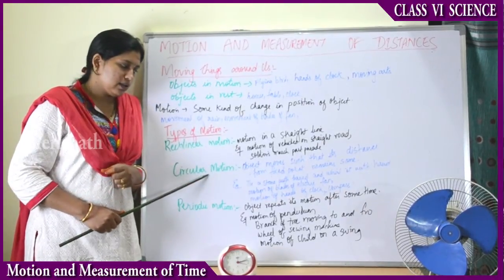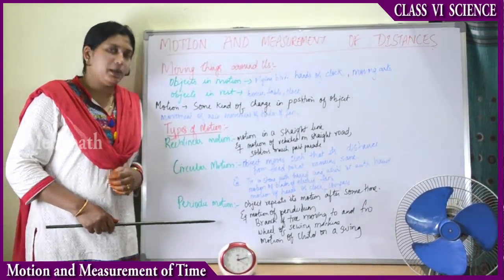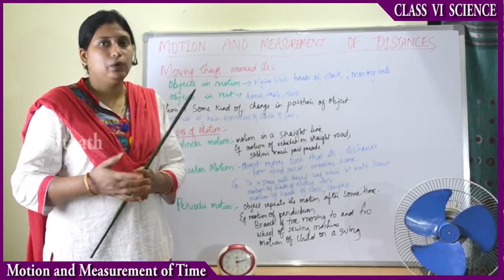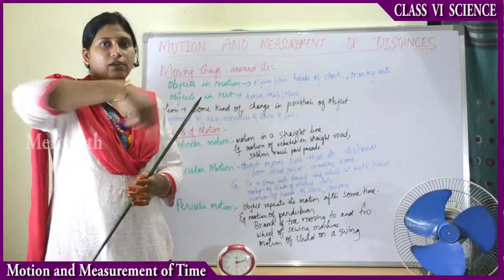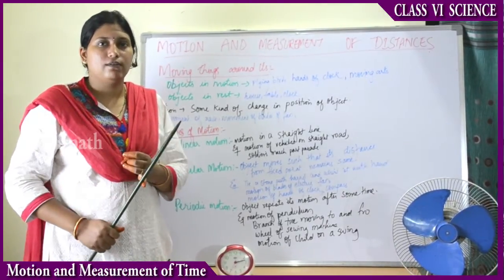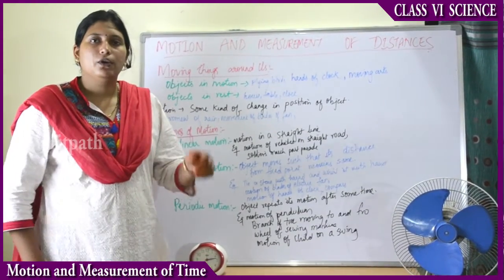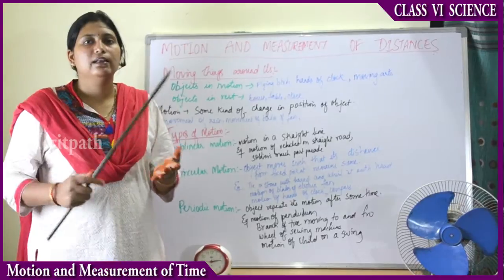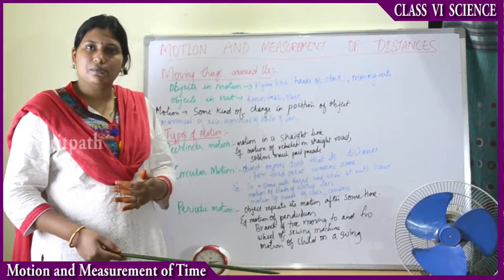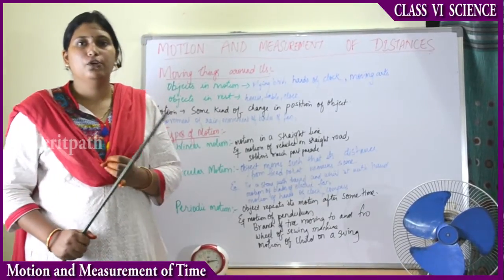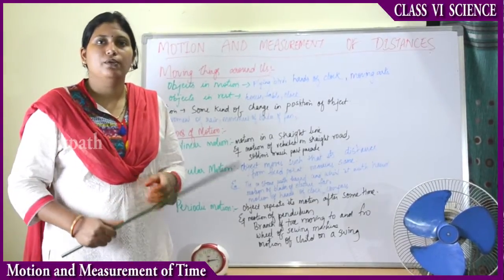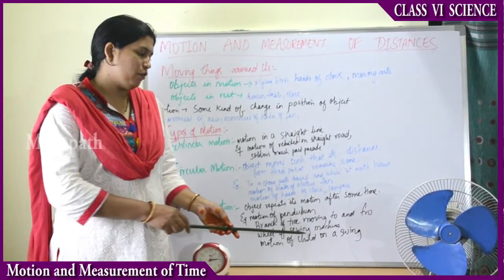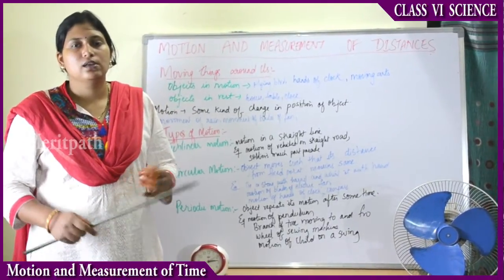Next we have periodic motion: objects repeat their motion after some time. Some houses have pendulum clocks where a stick-like thing hangs below and swings every 30 minutes or every 1 hour, making a noise indicating that 1 hour is over. So those pendulum clocks have periodic motion because they repeat their movement at intervals. Similarly, the branch of a tree moving to and fro whenever wind blows is also in periodic motion.